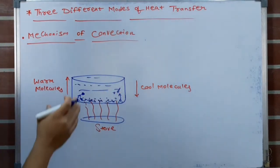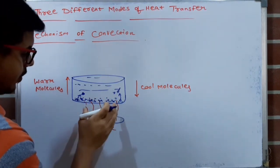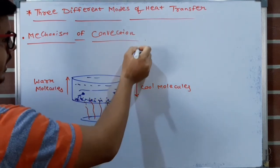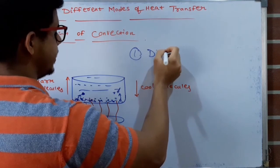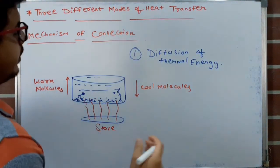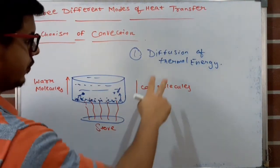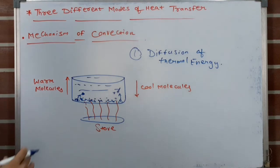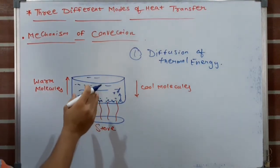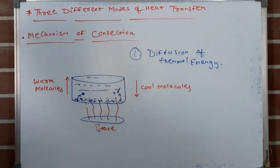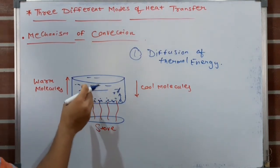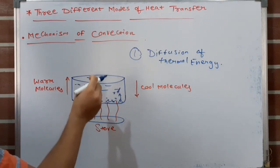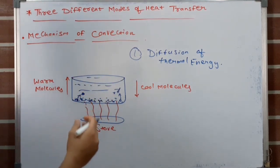This is the first phenomenon that occurs in convection: diffusion of thermal energy. In convection, two different phenomena are occurring. The first is diffusion of thermal energy. The second is: the water or liquid close to the solid boundary is at high temperature compared to the water at the top, so there is a temperature difference, which causes a difference in density.